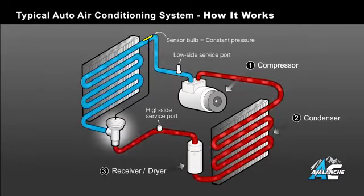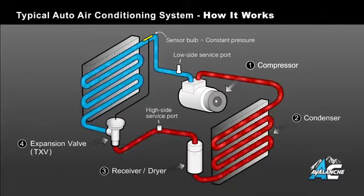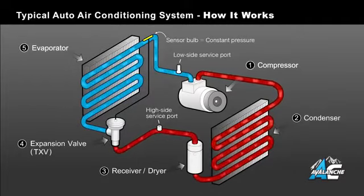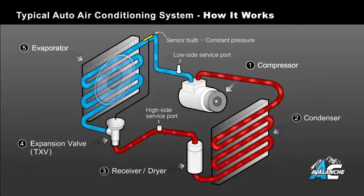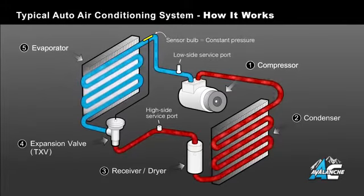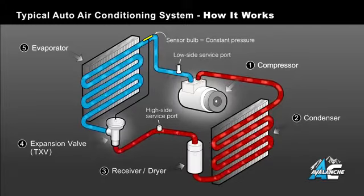Next, this high pressure liquid passes through the expansion valve, allowing it to expand and turn into a low pressure liquid, as indicated by our color change from red to blue. This low pressure liquid flows from the expansion valve directly into the evaporator, at which point it begins to boil and turn back into a low pressure gas, absorbing heat as it does so. This chills the walls of the evaporator, and the blower motor pushes this cool air through the vehicle's dashboard vents. As you can see, the liquid arrows turn back into a gas, as indicated by bubbles. The low side service port is located here, between the expansion valve and the compressor. The low pressure gas then returns to the compressor for another cycle.